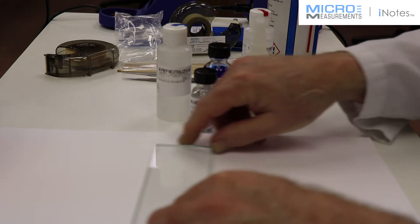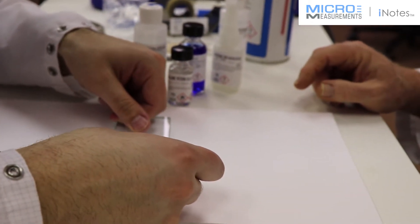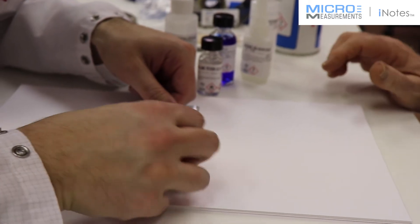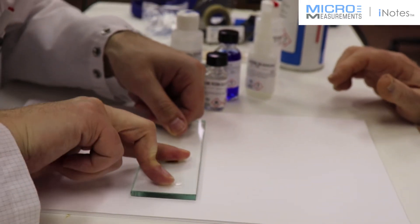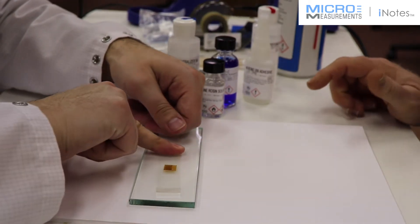And then we're going to transfer that over to the actual glass plate that we would be bonding to. Now normally we would have alignment marks so that we can align the gauge properly, but in this particular case this is more for demonstration purposes of the bonding technique.